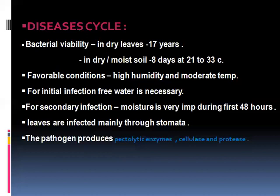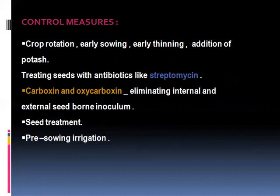The pathogen produces pectolytic enzymes, cellulase, and protease enzymes. Due to the release of these pectolytic, cellulase, and protease enzymes, the total plant body is damaged.